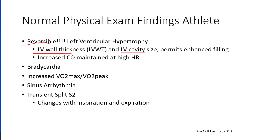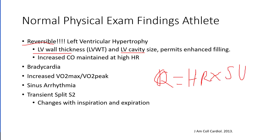You might see bradycardia — going back to the cardiac output equation, Q equals heart rate times stroke volume. In a well-trained athlete, stroke volume is really increased, so to maintain a normal cardiac output, heart rate doesn't need to be that high, so it actually goes down.